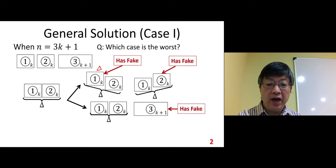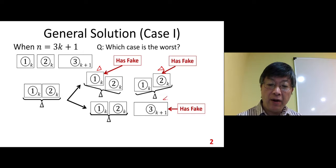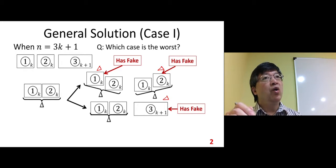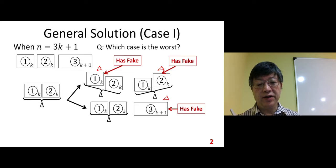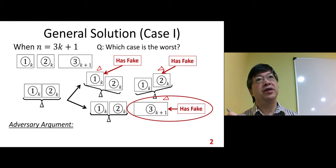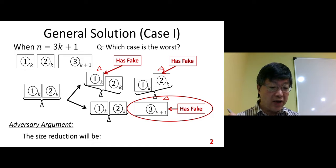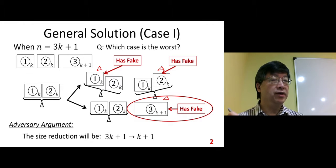The fake is in pile one — size k. The fake is in pile two — size also k. But the fake is in pile three — size k plus 1. Which one does our adversary choose to make life harder? Definitely pile three. Based on the adversary argument, the worst case is pile three, so the size reduction after one weighing goes from 3k plus 1 to k plus 1.